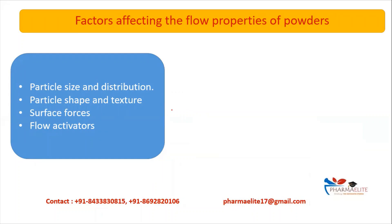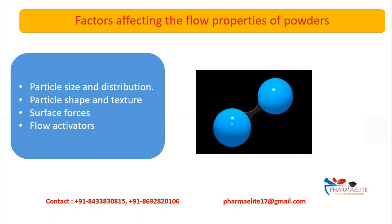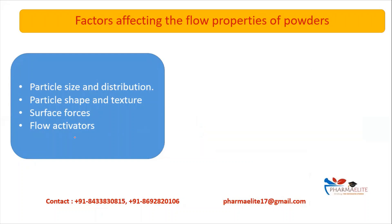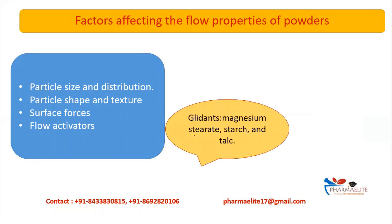The next property is surface forces. Particles have forces present on their surface — these are adhesion forces, cohesive forces, or repulsive forces. When bigger particles are broken down into smaller particles, more surface area is generated, which leads to an increase in these forces. The last factor is flow activators — these are glidants which increase the flow property of powders. Examples of glidants are magnesium stearate and talc. An optimum concentration of 1% glidant is used to increase flow.